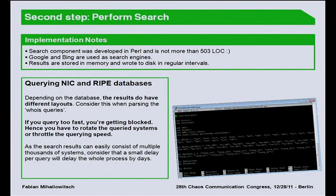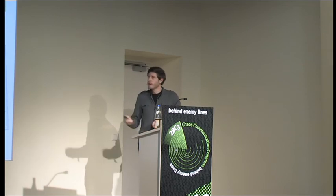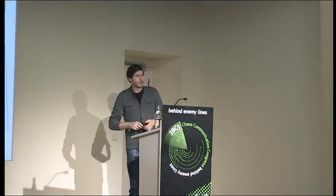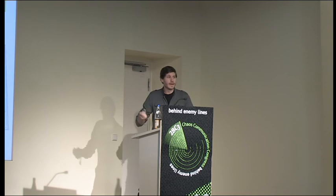When it comes to implementation, it's pretty easy. The main component can be written within 500 lines of Perl code — straightforward. We integrated Google and Bing as search engines. We didn't even use a database; we took all results in memory and wrote dumps to disk periodically because the tool runs quite a while, and if it crashes you don't want to lose all results. Querying NIC and RIPE databases is something to consider — every database provides data in different formats, so you have to keep that in mind when parsing. And you have to throttle your queries because the service will block you.